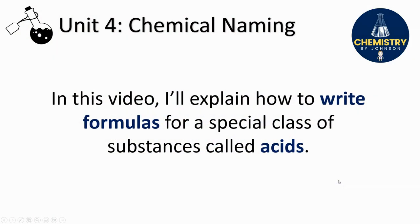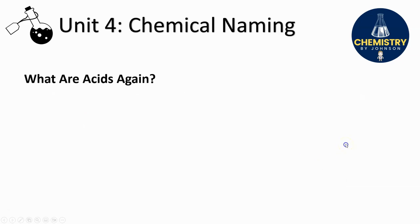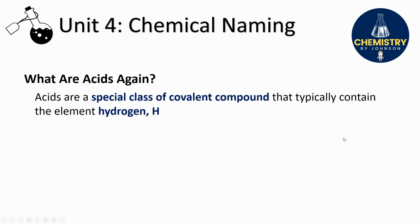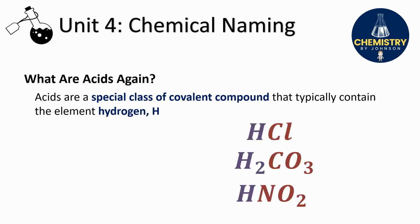Hey everybody, in this video I'm going to explain how to write formulas for a special class of substances called acids. Let's first review what acids are. These are a special type of covalent compound that typically contain the element hydrogen. You can always spot an acid if its formula looks like this: HCl, H2CO3, HNO2. If you see hydrogen written first, there's a good chance you're looking at the formula for an acid.